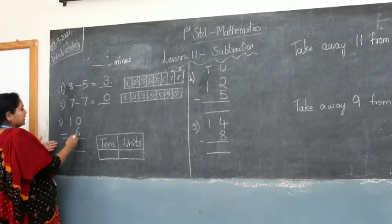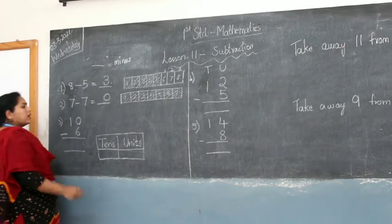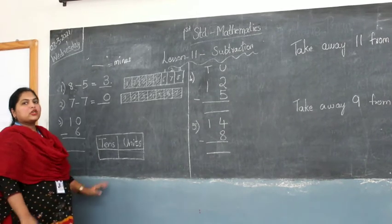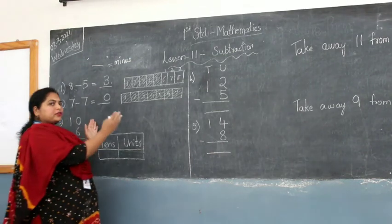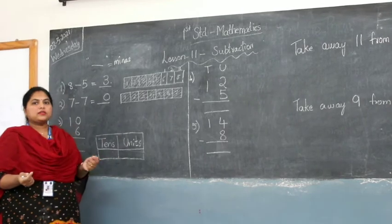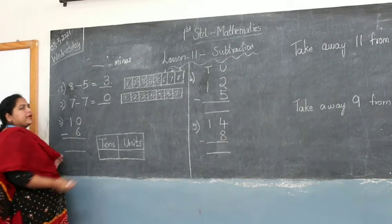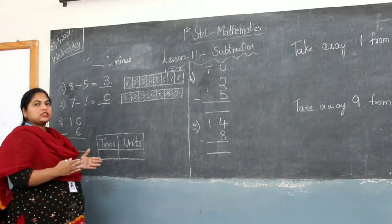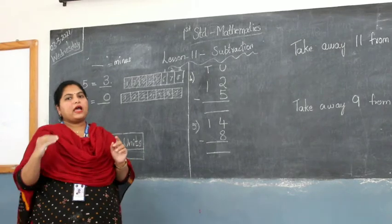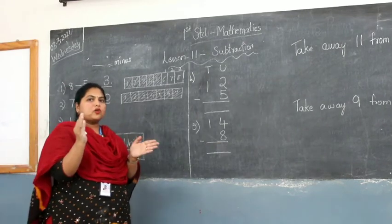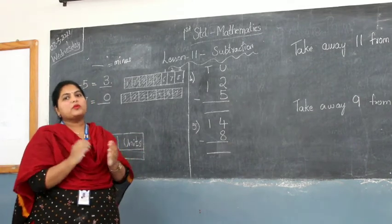The other way of subtraction is 10 minus 6. You can make 10 boxes and shade away 6 boxes. Or the other way is we use the grouping of 10s and units, which we learnt in the previous chapter in addition. Now we will group in 10s and learn to subtract. In addition, we put how many numbers we have, grouped to 10, and added. In subtraction, we put the lines for how many we have, take away, and then group into 10 to see how much we are left with.